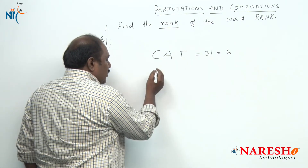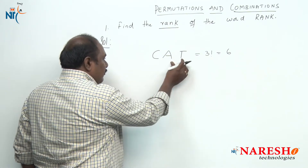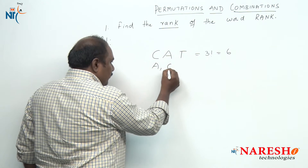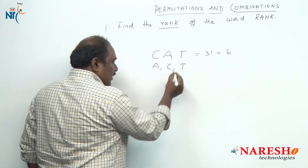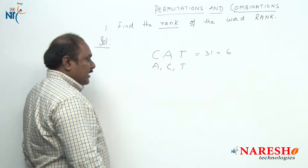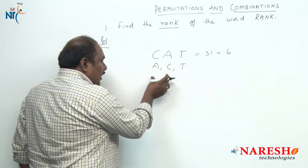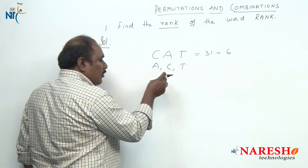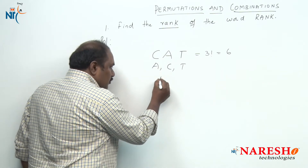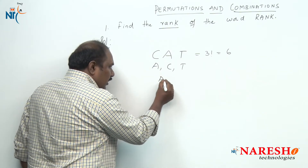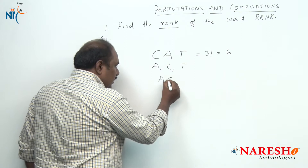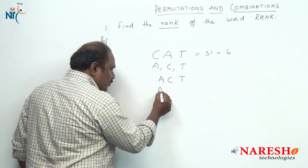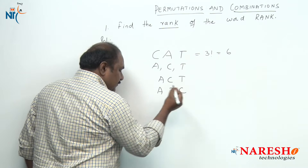What are the letters in the word CAT? According to alphabetical order, the first one is A, next C, next it is T. Whatever arrangements we make, the first arrangement according to alphabetical order should start with A. So the first arrangement should be A, C, T, the next one should be A, T, C.